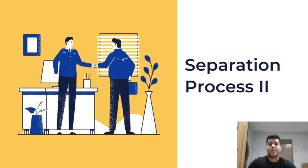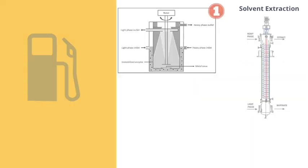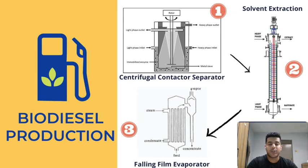Hi, my name is Abdurrahman Khalid. I will be talking about separation process 2, myself and Sarah, my classmate. We will be talking about biodiesel production equipment's function and working mechanism. The process we chose is made up of three different components or equipment: centrifugal separator, solvent extractor, and lastly, falling film evaporator.